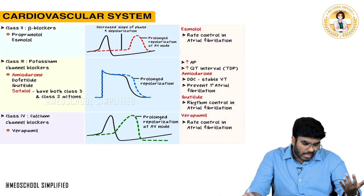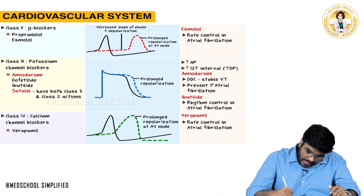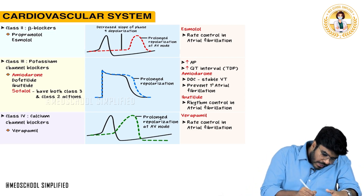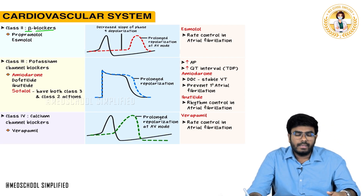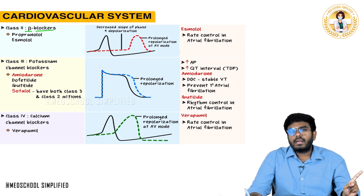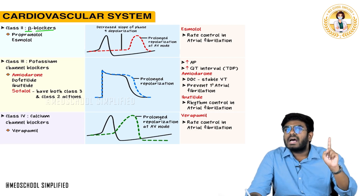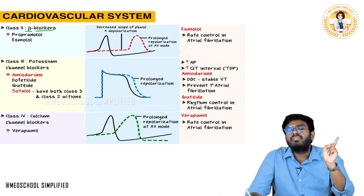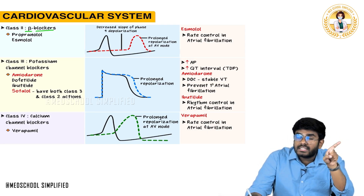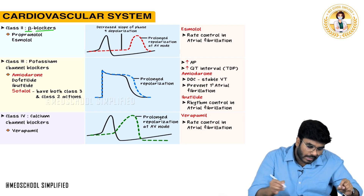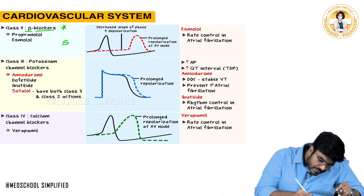Class 2 anti-arrhythmic drugs are beta blockers. Class 1 drugs (1A, 1B, 1C) act on the ventricular myocardium, not the SA node. But beta blockers act on the SA node. We know the SA node action potential can be influenced by the sympathetic and parasympathetic nervous systems.